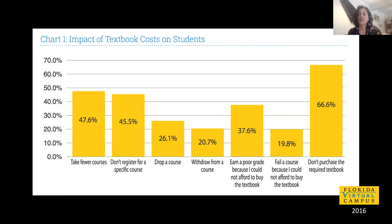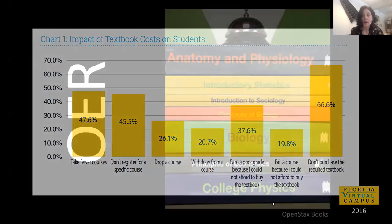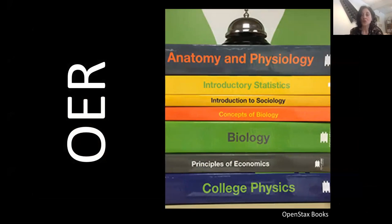As a faculty member, this is where I started understanding that the textbook cost question was not actually about the high cost of textbooks — it was about whether my students were going to have access to their educations, whether they'd be able to enroll, complete their courses, and ultimately complete their degrees. You can see the very high percentages of students who are dropping courses, withdrawing, or failing specifically because they report they can't afford the cost of learning materials. That's where the whole thing becomes a social justice issue.